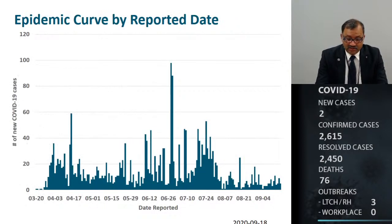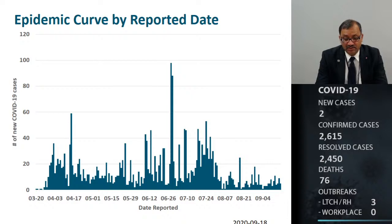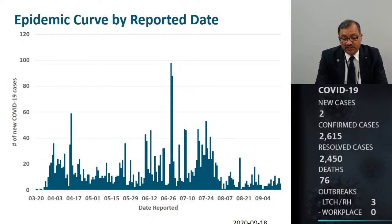Looking at the epidemic curve, epidemic curves help us assess the progression of the disease, whether we are talking about a community in an outbreak situation or any kind of cluster situation. This particular epi curve is created to show the number of confirmed cases by the date it was reported to public health. On the vertical axis you are seeing the number of confirmed cases, and on the horizontal axis we have the dates these cases are reported to public health.